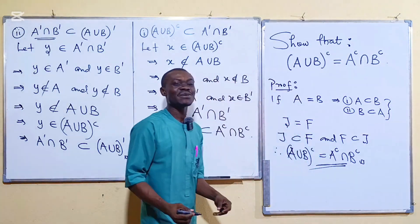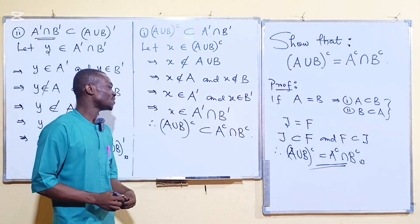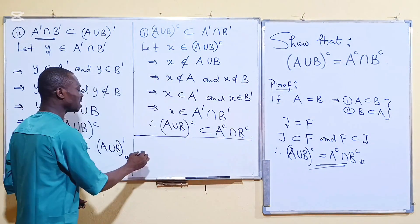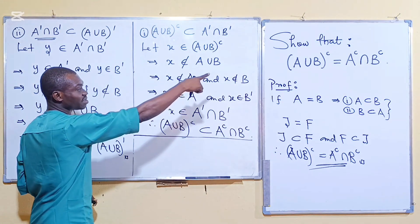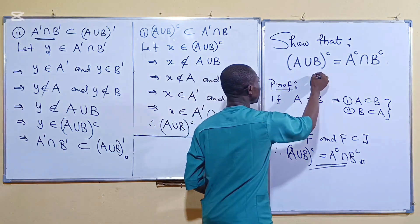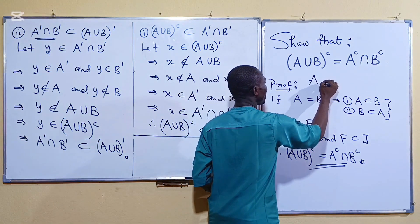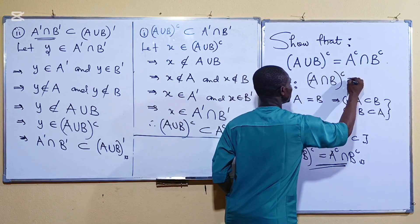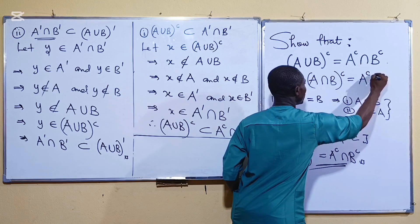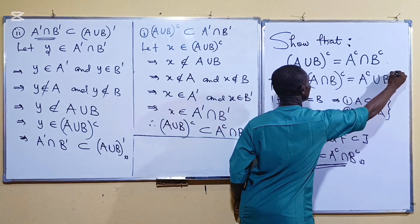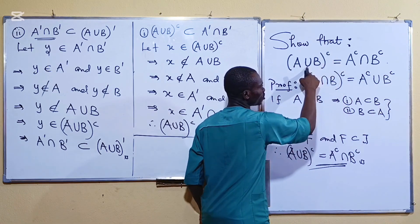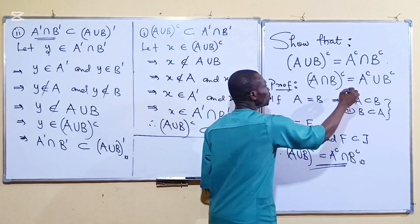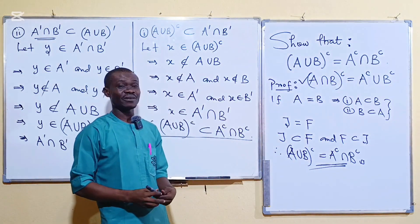So that is what we set to show you in this video. Remember I said I'm going to give you something to try on your own. That's the second part of that rule, which says that if I have A intersection B complement that it is equal to A complement union B complement. So this complement turns union to intersection, it also turns intersection to union. Show that this one is true on your own.